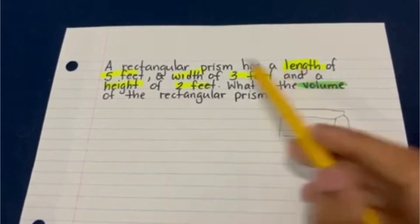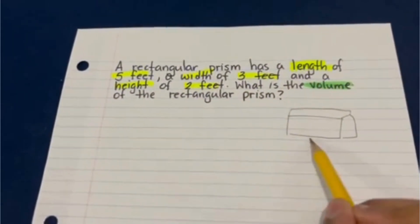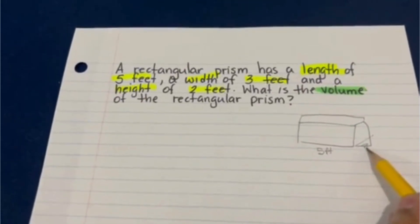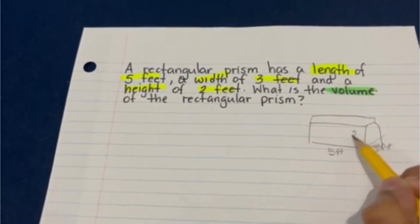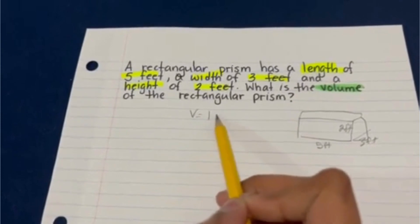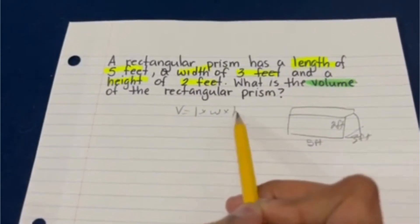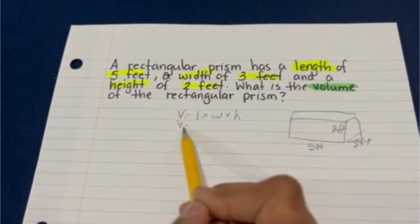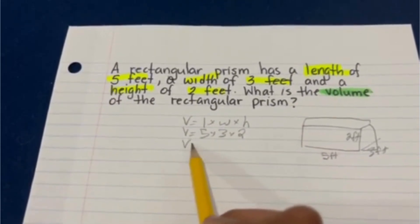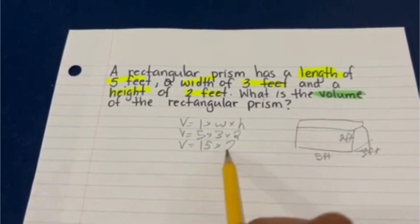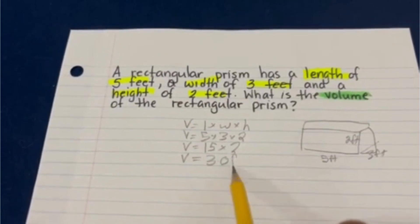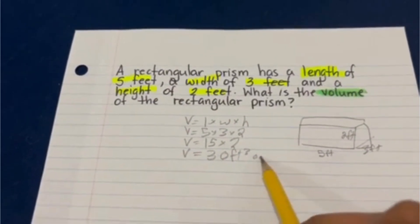By filling in the information, we know that the length is five feet, the width is three feet, and the height is two feet. We know that the formula for volume is length times width times height. And by filling in the information, volume equals five times three times two. Volume equals 15 times two, meaning that volume equals 30 feet cubed, or 30 cubic feet.